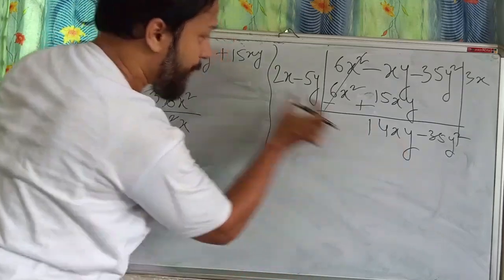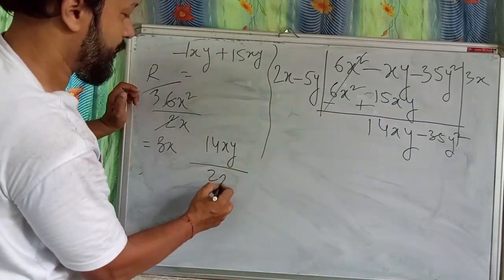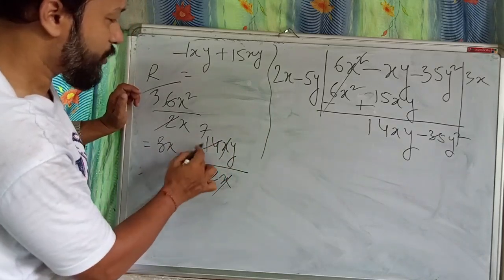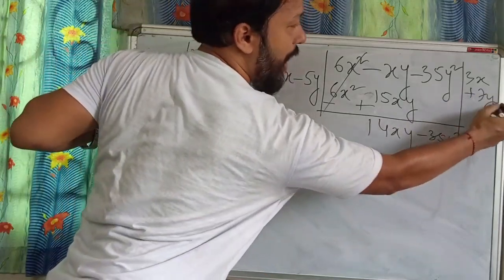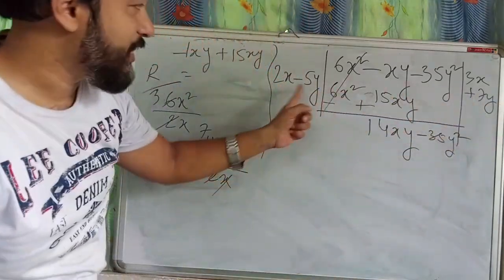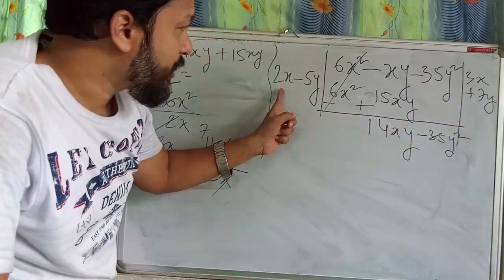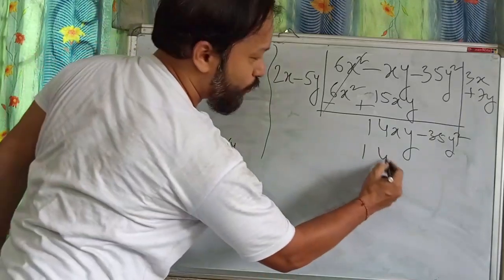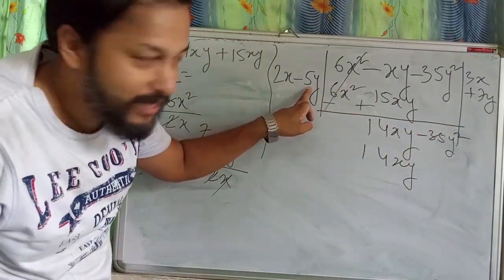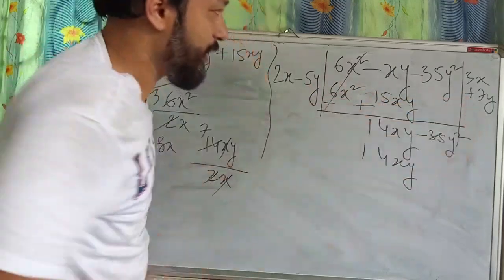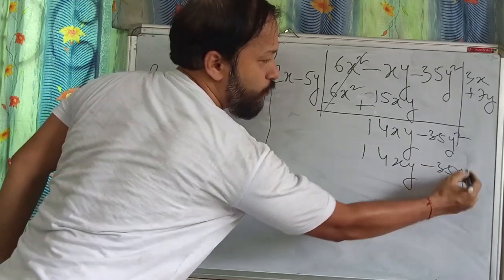Again first term by first term: 14xy divided by 2x. The x's cancel and I get 7y. Write plus 7y in the quotient. By 7y, multiply the divisor: 7y times 2x gives 14xy, and 7y times minus 5y gives minus 35y². Change the sign — plus becomes minus, minus becomes plus.